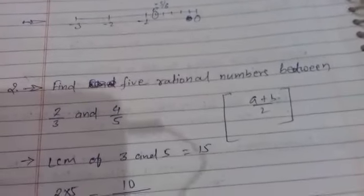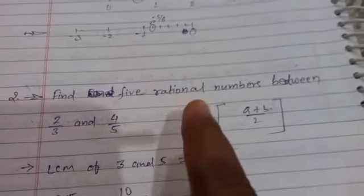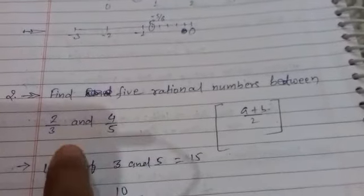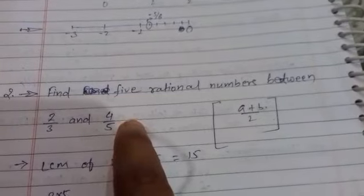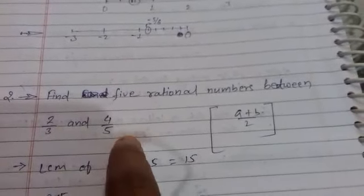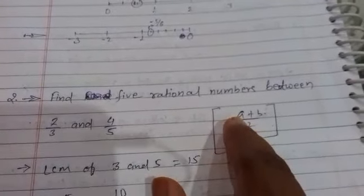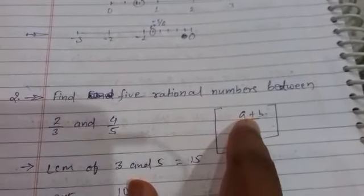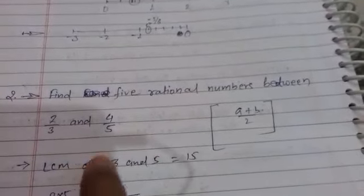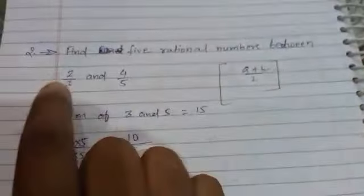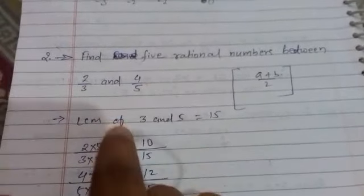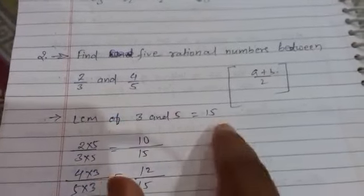Now the second question is: find 5 rational numbers between 2/3 and 4/5. Whenever we determine rational numbers between two given rational numbers, a simple formula is the sum of the rational numbers divided by 2. But here I am going to explain in another way, a simpler way. First of all, we have to take the LCM of the denominators. Now the LCM of 3 and 5 is 15.